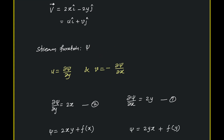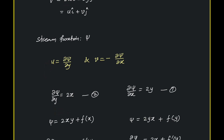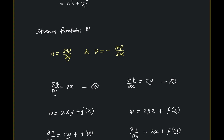So, ∂ψ/∂y equals u, which is 2x. Integrating this, we get ψ = 2xy, and we have an integration constant which is a function of x, because this is a partial derivative with respect to y, so the integration constant will be a function of x.